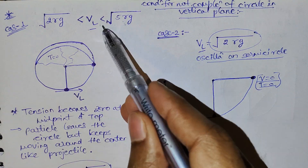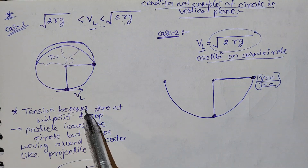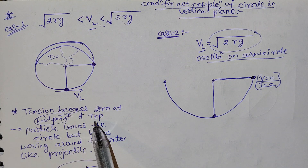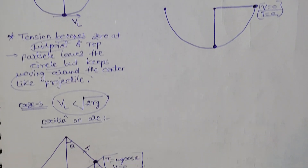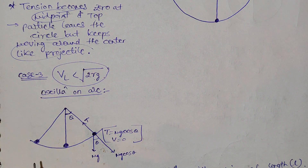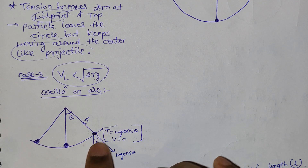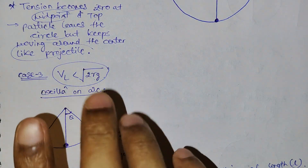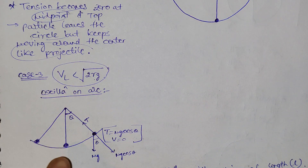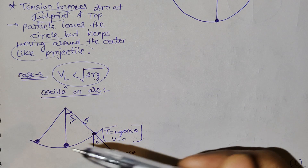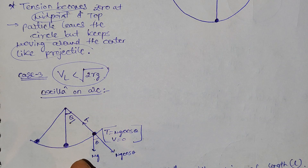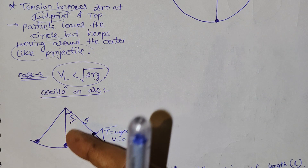If velocity is between root(2RG) and root(5RG), the particle moves around the center like a projectile. If velocity is less than root(2RG), the particle moves in an arc of angle theta — at that point draw mg, with component mg·cos(theta) inward.